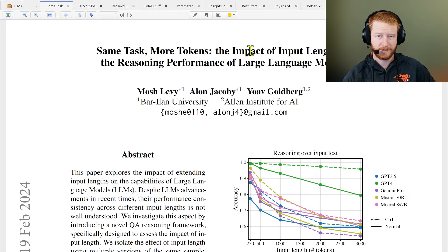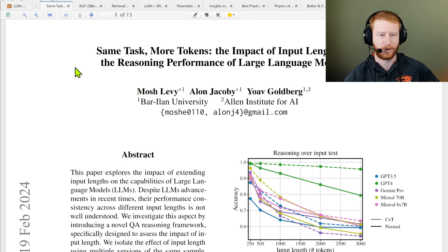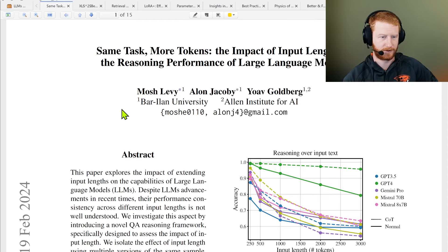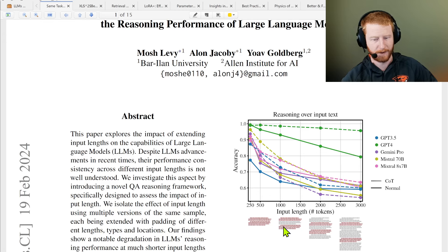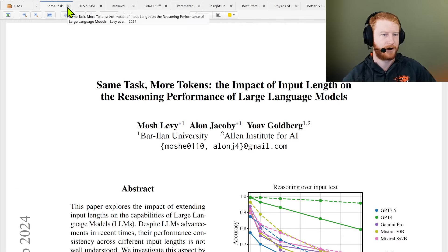Same task, more tokens - impact of input length on reasoning performance of large language models. This and a few others came up because we were frustrated with needle in a haystack being the gold standard of long context evaluation. That's not actually a hard task. Can we find different types of tasks that have multiple pieces of relevant information that need to be retrieved and then used to answer? This is a pretty cool paper that tries to do that, and very interesting to see that these are all models that have advertised tens or hundreds of thousands of tokens of context length, but in this particular task that requires fetching multiple different things then reasoning about them, some models do a lot better than others.